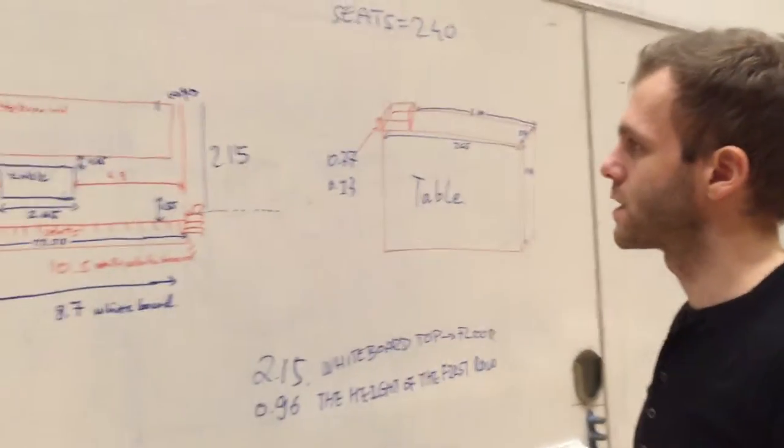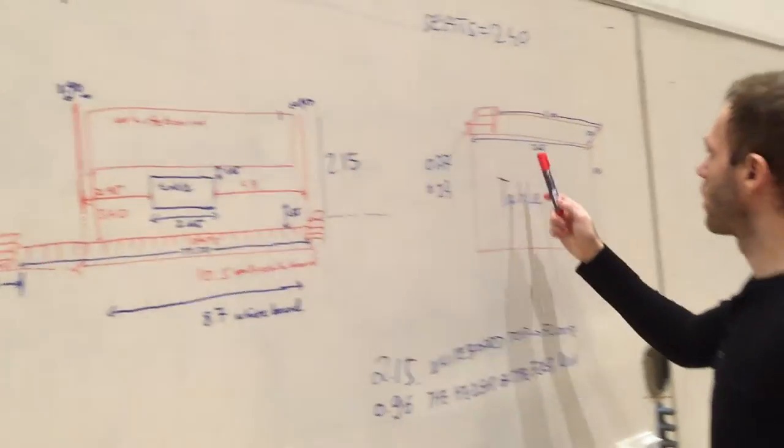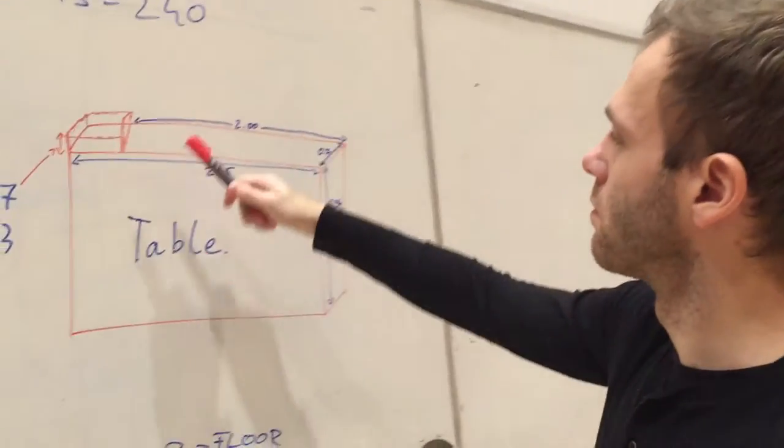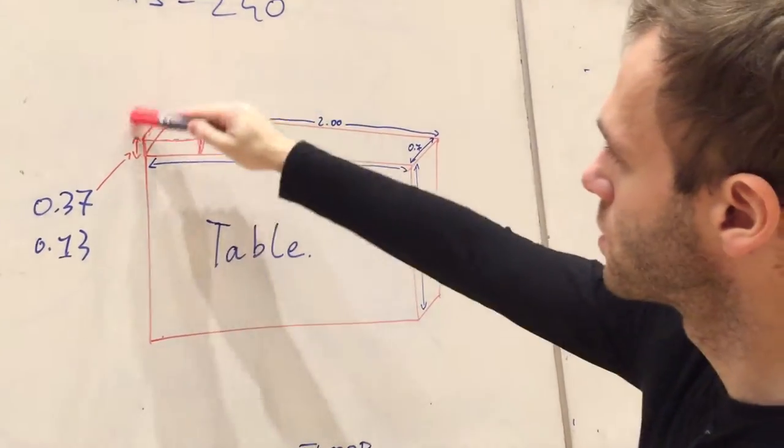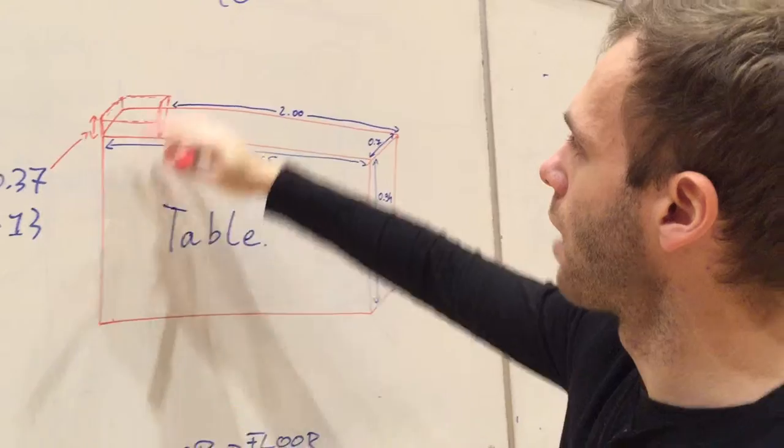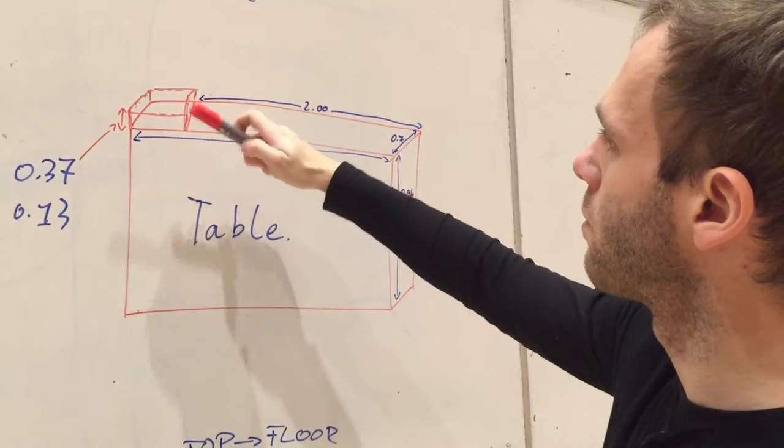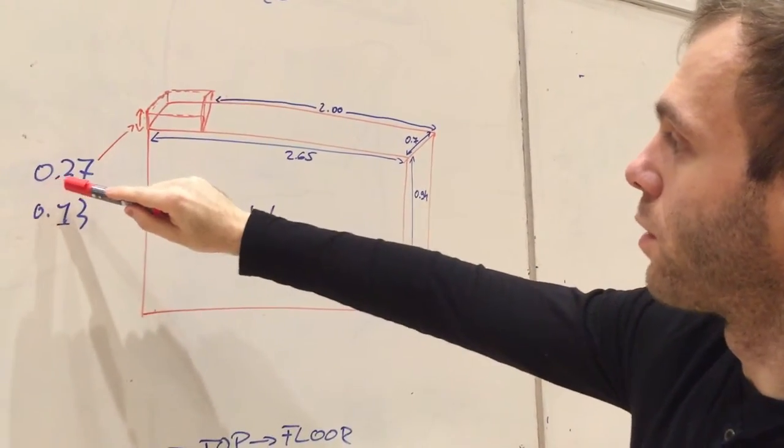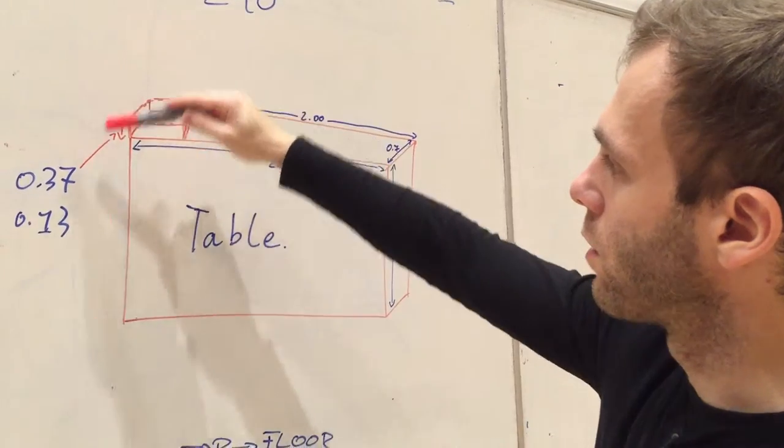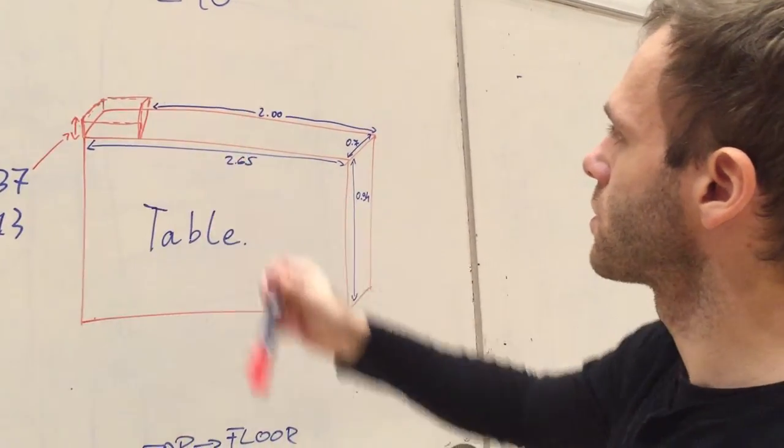And yes, the table is divided in two parts, with this section we can move it up and down with buttons and we can make it 0.37 high or only 0.13.